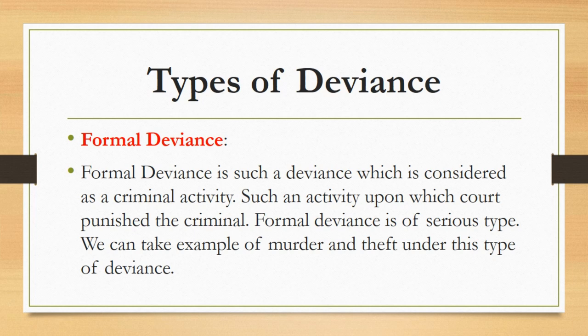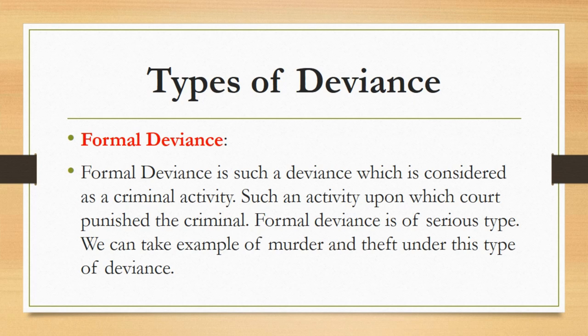There are two types of deviance: formal deviance and informal deviance. Formal deviance is such a deviance which is considered as a criminal activity — an activity upon which the court punishes the criminal. Formal deviance is of a serious type. For example, murder and theft fall under this type. Killing someone or doing robbery are considered acts of deviance in almost every society because these acts are against cultural norms and values and are of serious type, so the court will be involved and punish the culprits. All those acts which are against the norms, values and cultural standards of a society and are of serious type, like murder and theft, are called formal deviance.